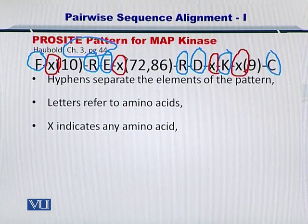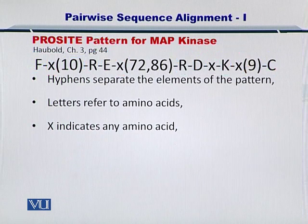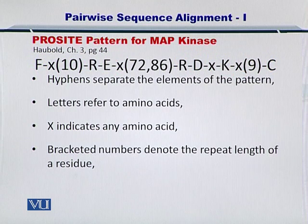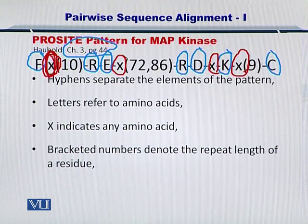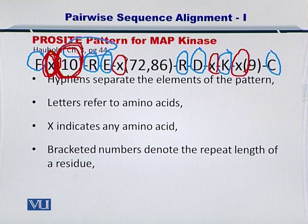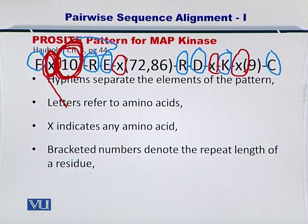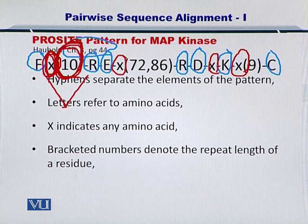I've circled all X's for you. The bracketed numbers denote the repeat length of a residue. For instance, here you have an X, so you can have any amino acid, and it should be repeated 10 times. So there are 10 amino acids between F and R. In this way, you can fill up the area between these two amino acids.